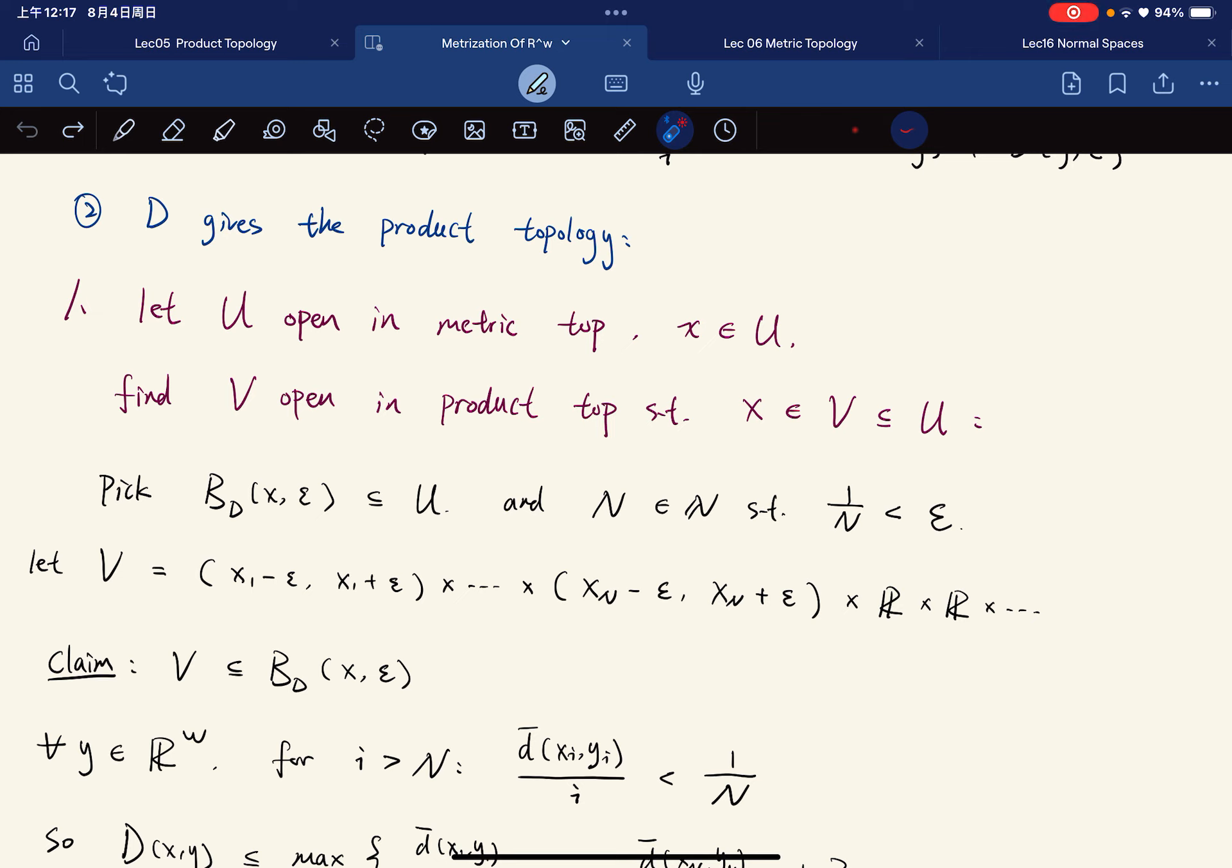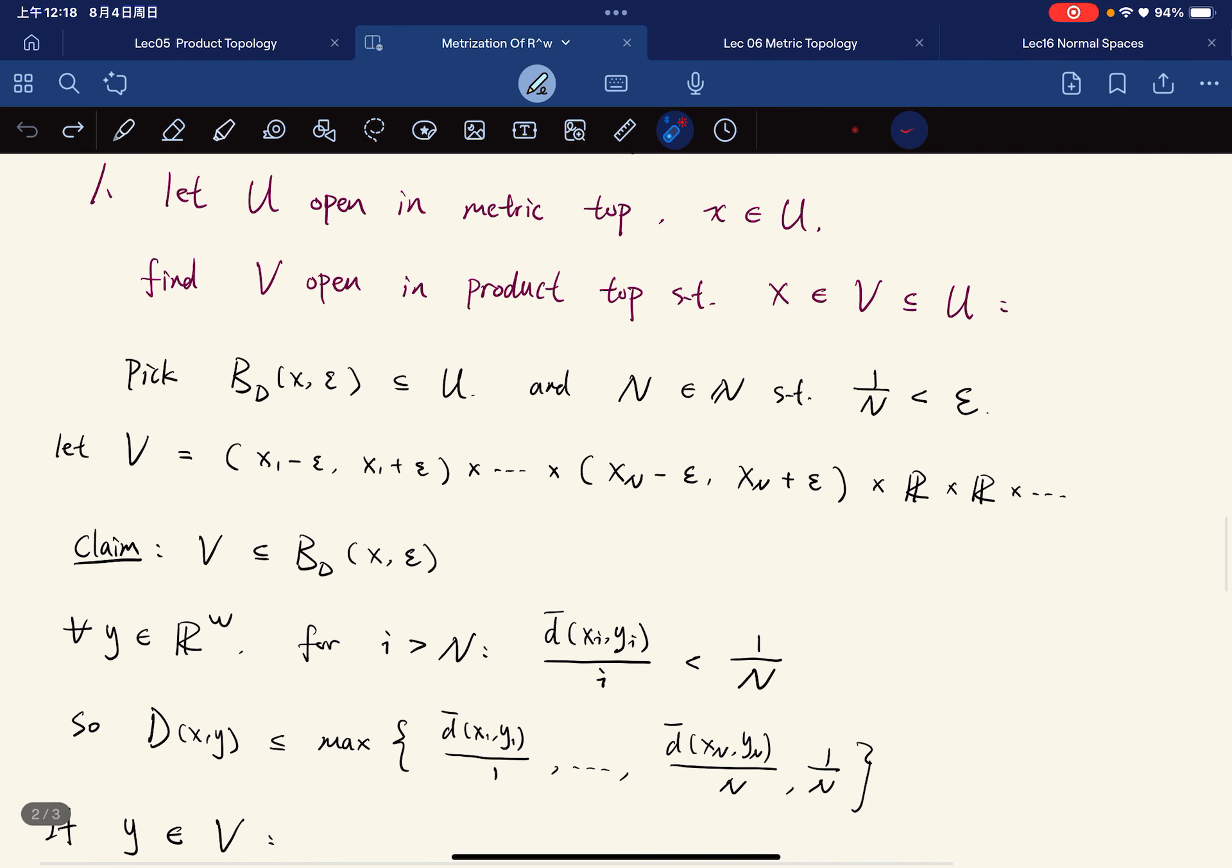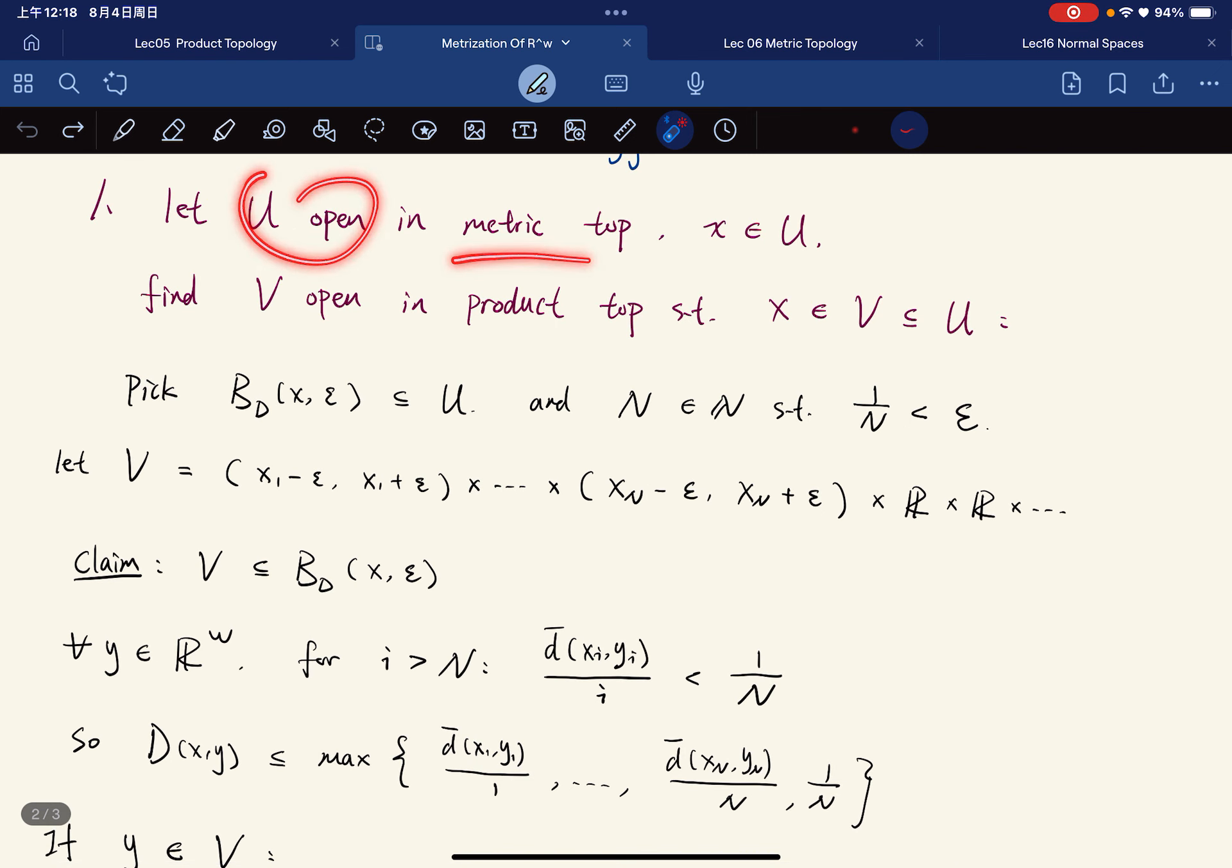And this is what we want to show: that the product topology is finer. Let's just do it. We pick first, because U is open in metric topology and x is in U, we can pick an ε greater than 0, such that the ball is contained in U.